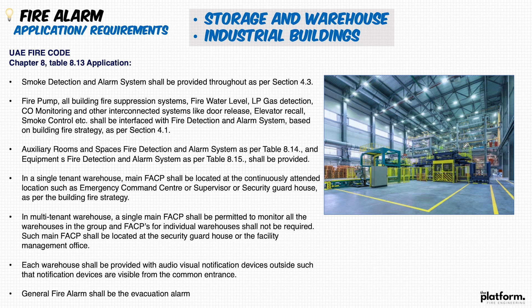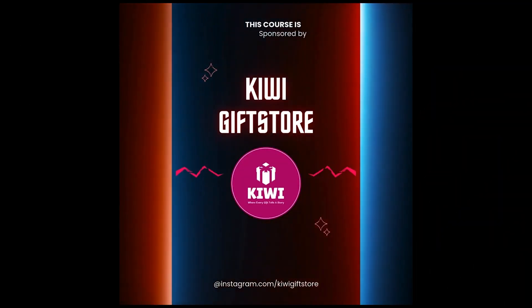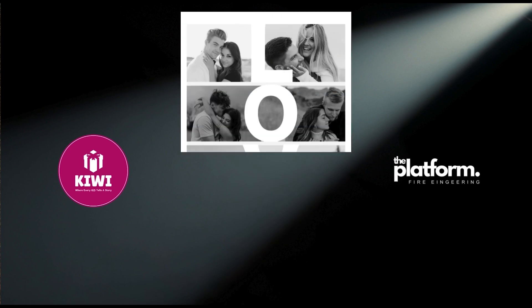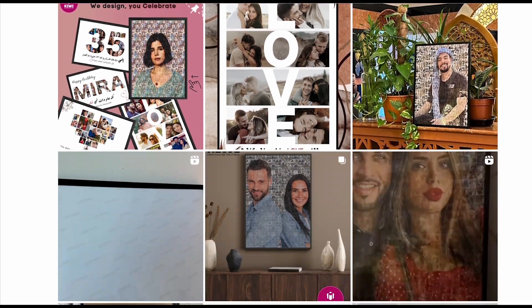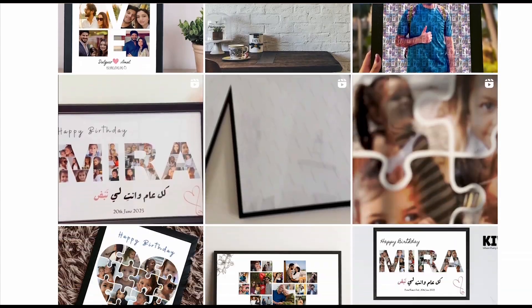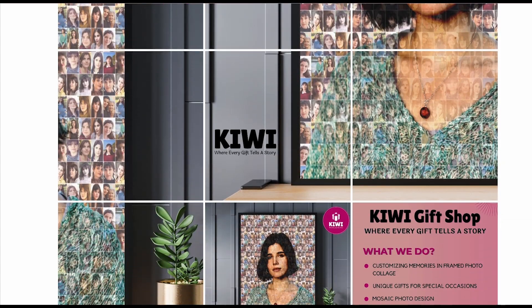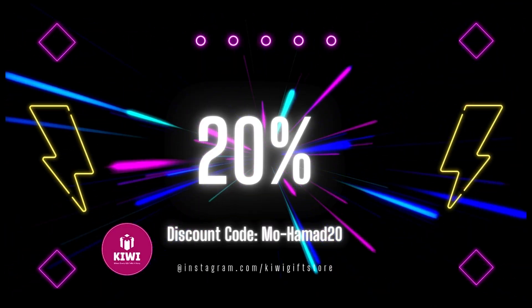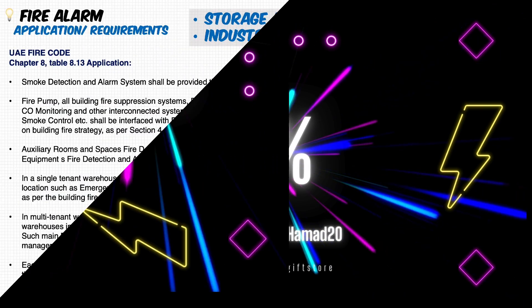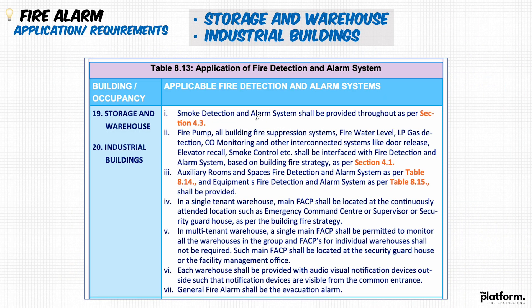Today I selected two areas for easy understanding of the code and the requirements. I'll be talking about storage and warehouses — if you have a storage, warehouse, or industrial building and need to design the fire alarm system or know the requirement and select the system for this area, you'll refer to the code and start reading line by line in this table. You'll find the storage and warehouse area requirement or occupancy, then you'll know what is required to be provided as a fire alarm system.